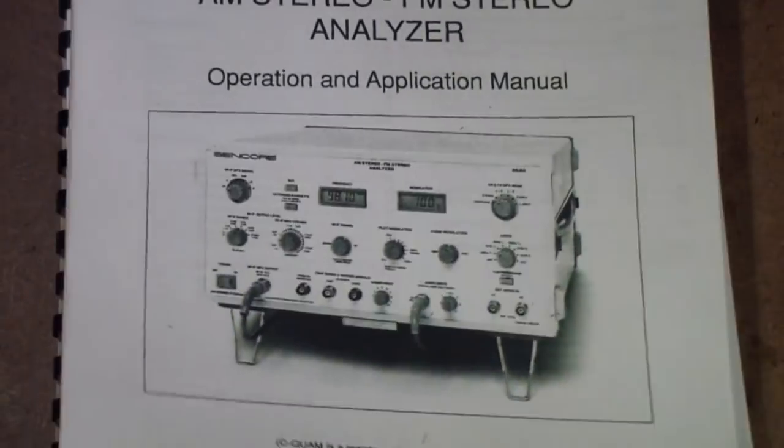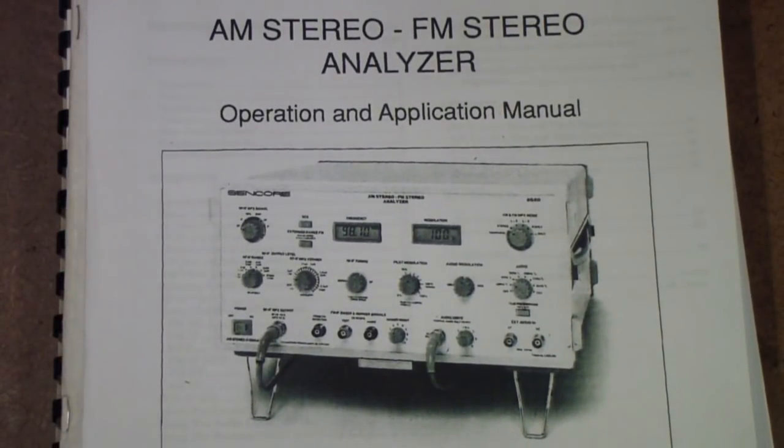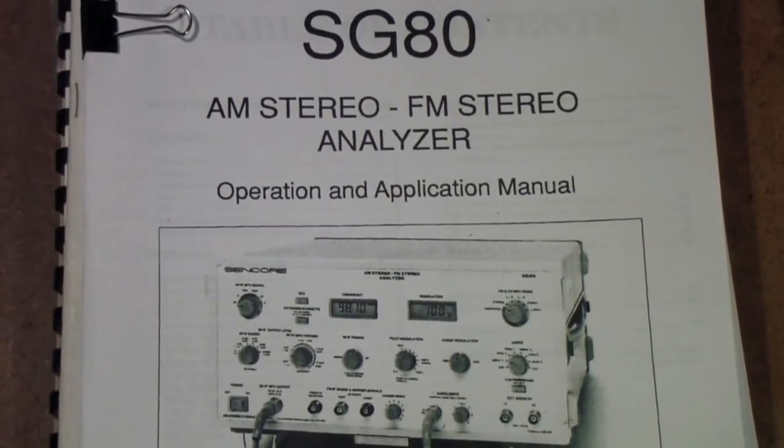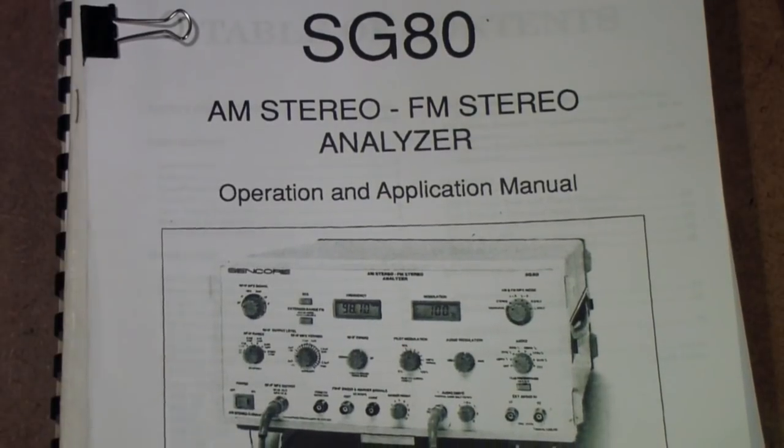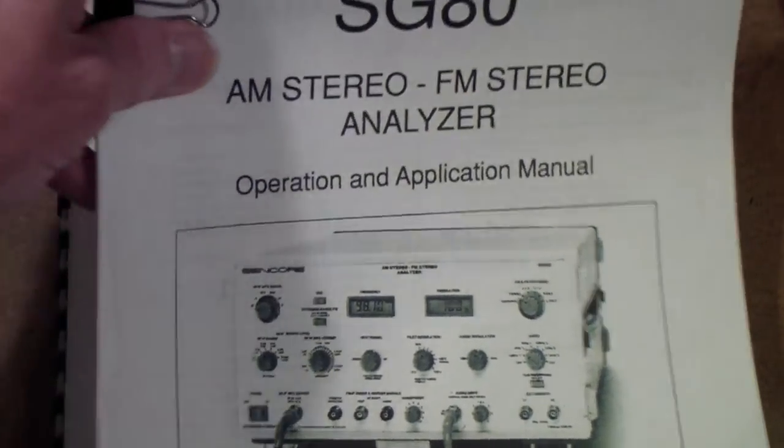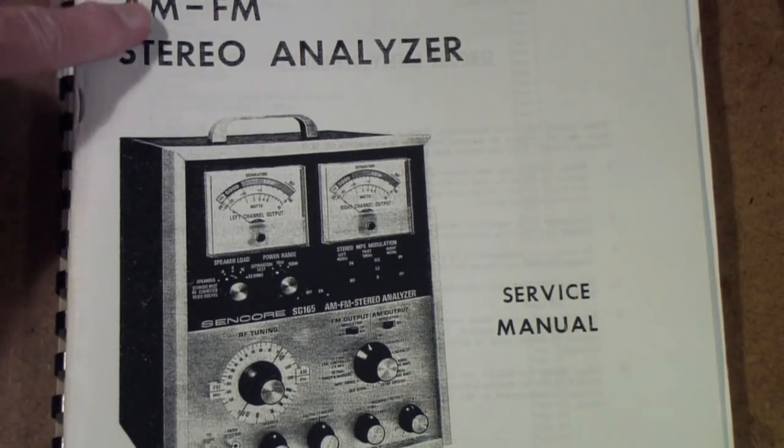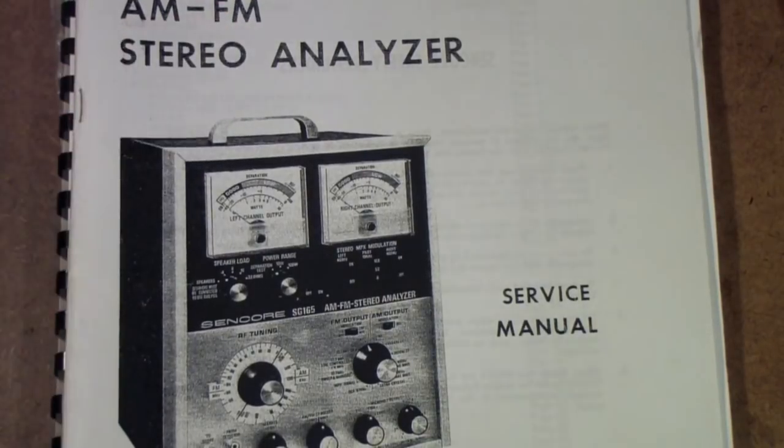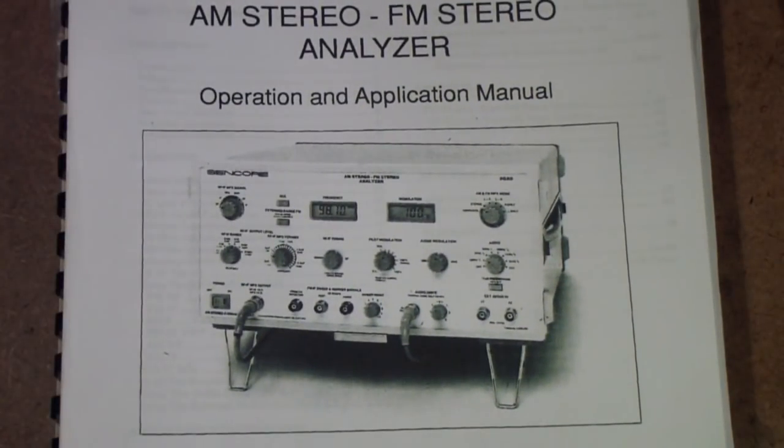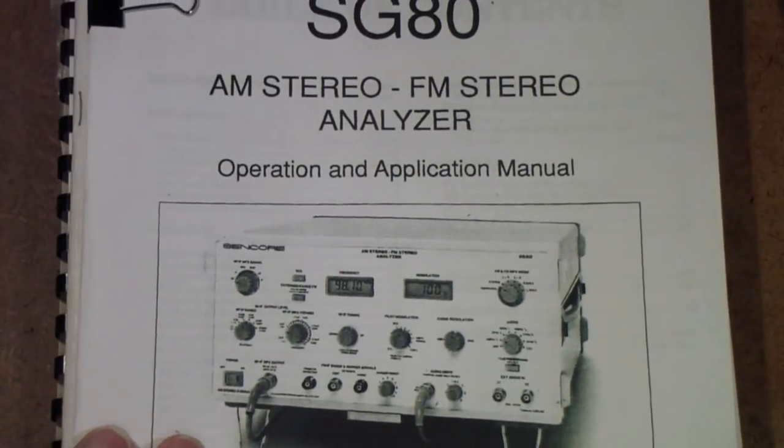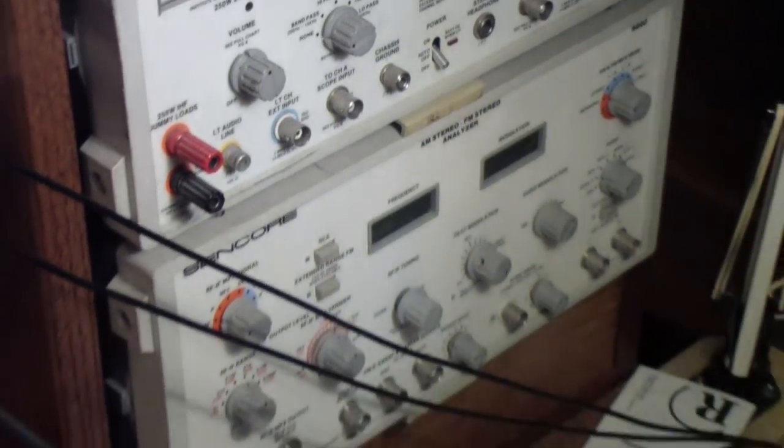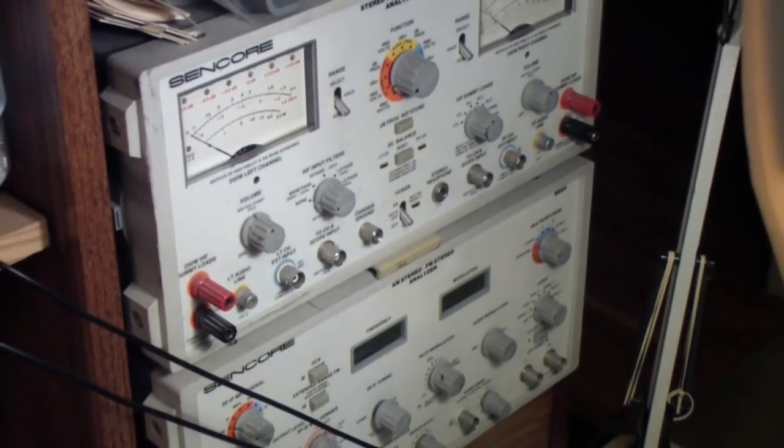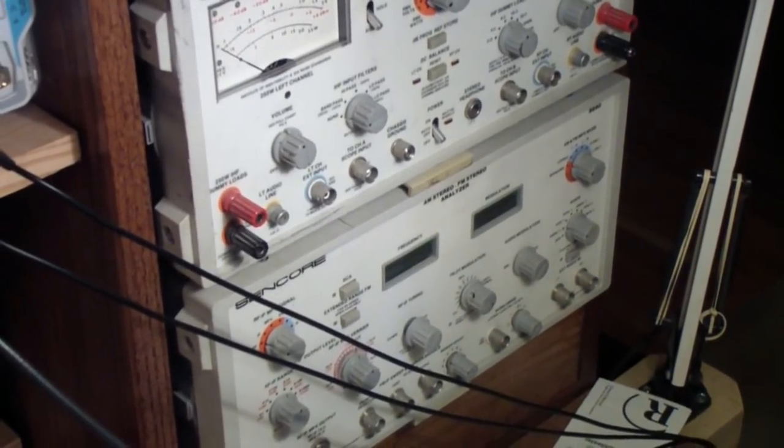And then a later model of that Sencore was called the SG80, which they called the AM stereo FM stereo analyzer, and that added the AM stereo to the FM stereo. Now this one says AM stereo analyzer, but the stereo is only for FM. The SG80 added AM stereo, which really never caught on, but nonetheless this is one of those that you can use. And for those of you that have seen my other videos, you know I tend to keep it at hand because I use it for aligning FM tuners, or at least checking the response of FM tuners. It's the unit there at the bottom.